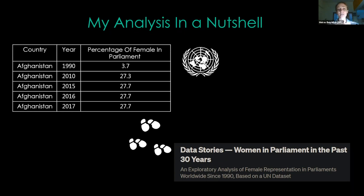Just a small word about the dataset I analyzed. My dataset was taken from the UN Open Data, which is a source I highly recommend. It had two tables — one for countries and one for continents — where each table had three columns: country, year, and the percentage of female representation in parliament in the given year and country.